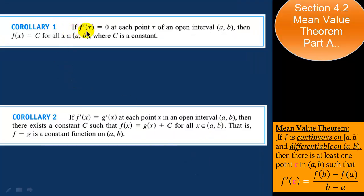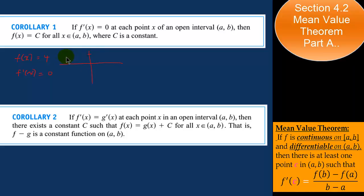Corollary 1: if f prime is equal to 0 at each point in an open interval from A to B, then the function has to be a constant function for all x in A and B, where c is a constant. That makes sense — if we let f of x equal to 4, then f prime of x is equal to 0. Graphically, a horizontal line passing through 0, 4 has slope 0, and the line tangent to this line is the line itself, so its derivative is also 0.